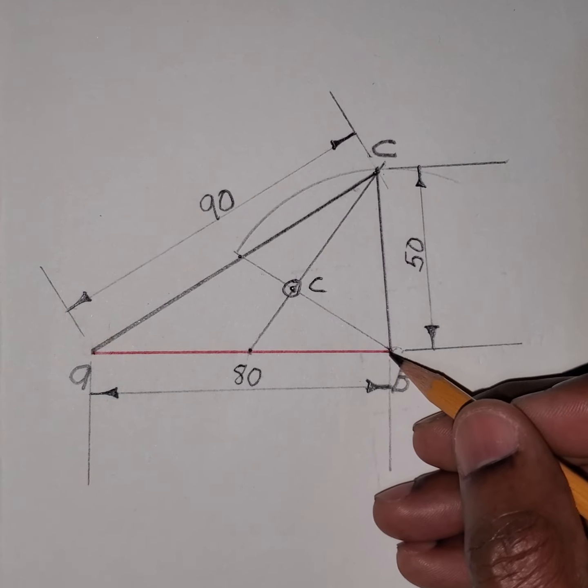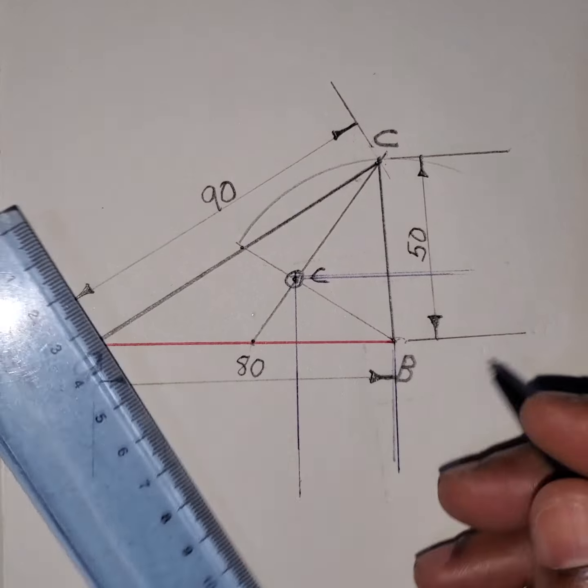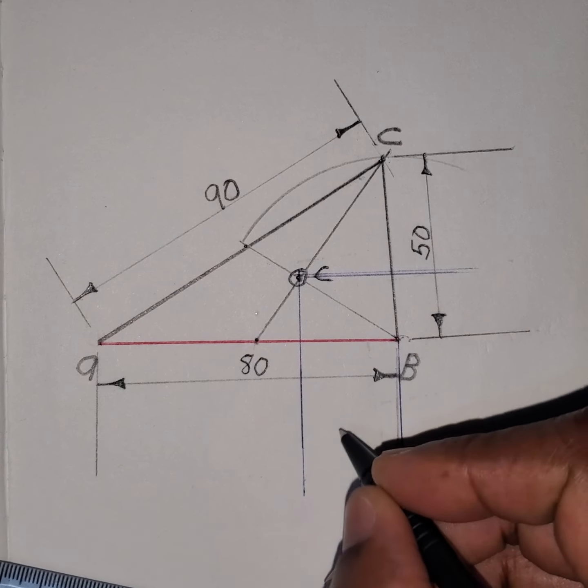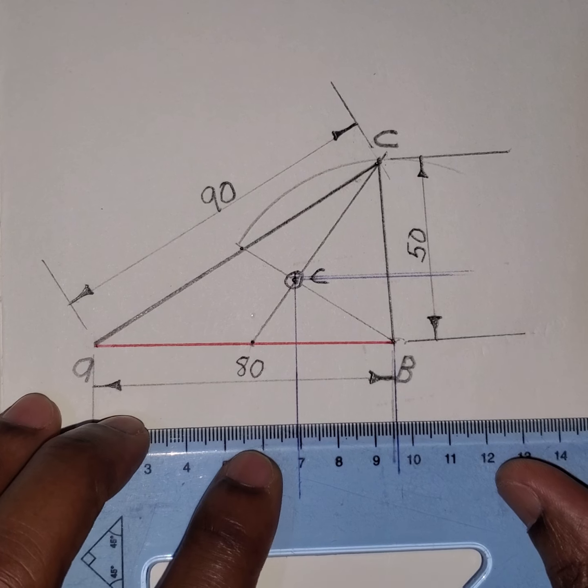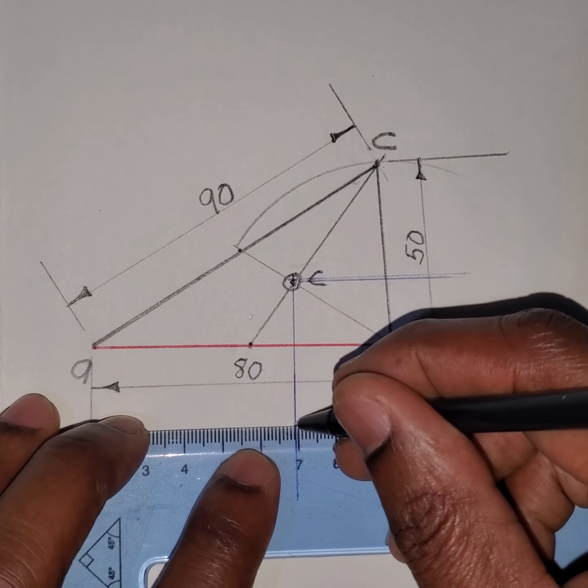Please note that to get a vertical line here I align this with that. And the measurement is taken from here. So the centroid on the x-axis is from here to here.